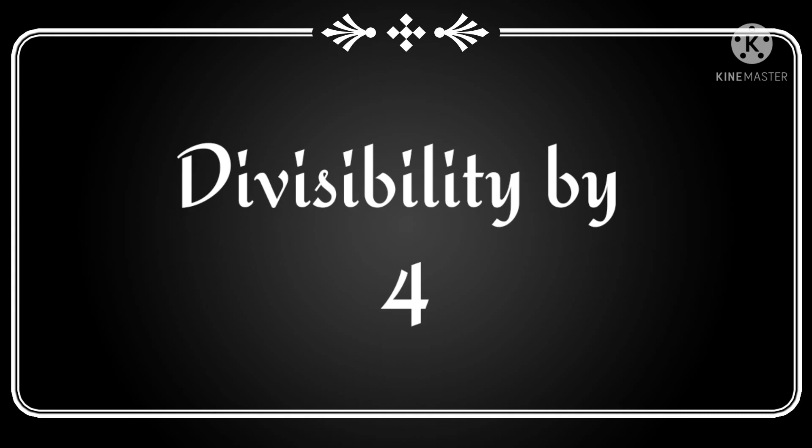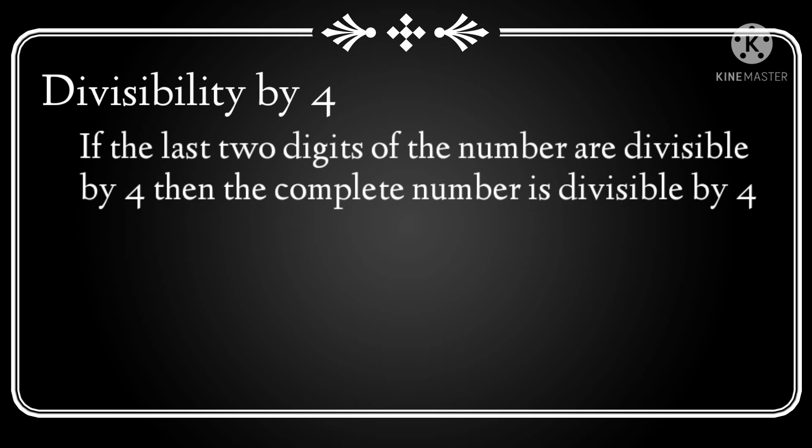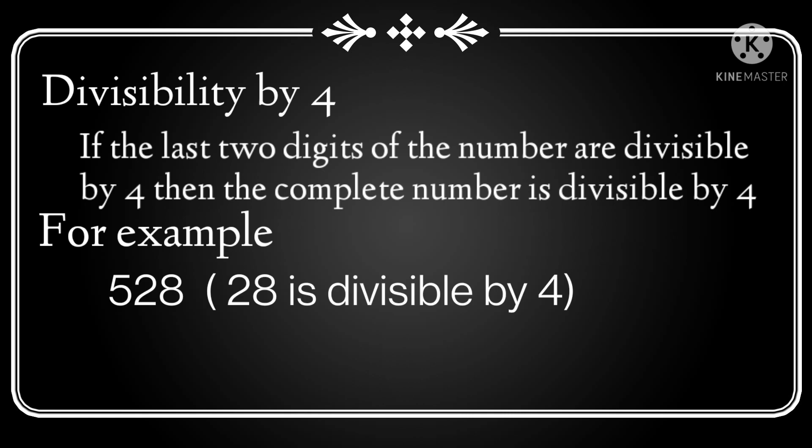Next is divisibility by 4. The rule for divisibility by 4 is: if the last two digits of the number are divisible by 4, then the complete number is divisible by 4. For example, look at the number 528. Take the last two digits — that is 28. Since 28 is divisible by 4, the whole number 528 is divisible by 4.